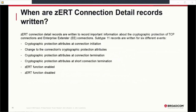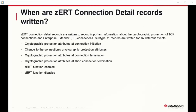There are several events that can trigger a ZERT connection detail record to be written — six different events in total. Records are written at connection initiation, when a connection's cryptographic protection attributes change, at connection termination, for connections that initiate and terminate very quickly, when ZERT functionality is enabled, and when it's disabled. A workload with a large number of very frequent short-lived connections could therefore generate very many ZERT connection detail records.